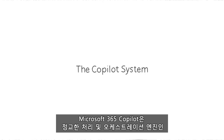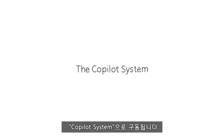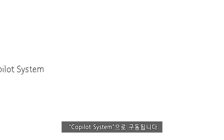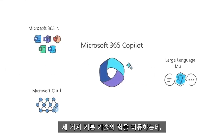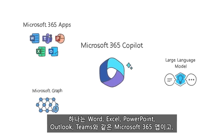Microsoft 365 Copilot is powered by what we call the Copilot system, a sophisticated processing and orchestration engine. It harnesses the power of three foundational technologies. The Microsoft 365 apps — that's Word, Excel, PowerPoint, Outlook, Teams, and more.